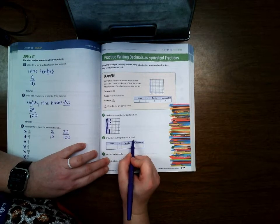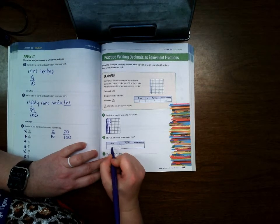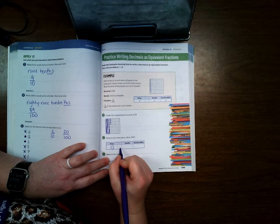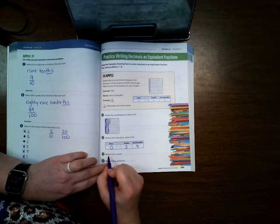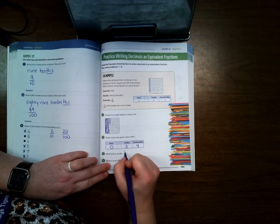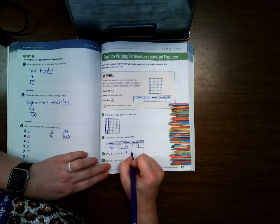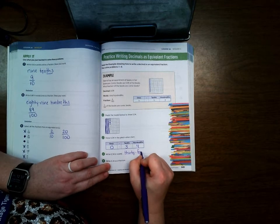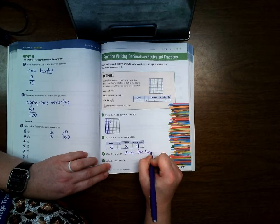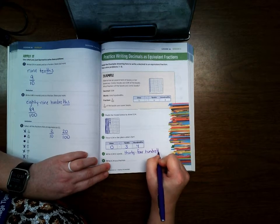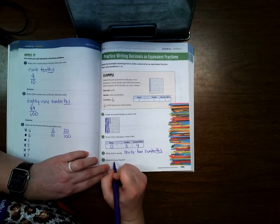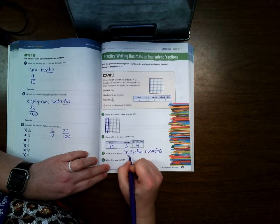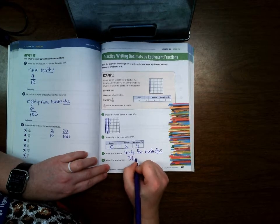Show it on a place value chart. There's no ones place, so we put a zero, decimal 34. Write it in words: 34 hundredths. Make sure you have that 'ths'. Write it as a fraction: well, there's 34 shaded of 100, so 34/100.